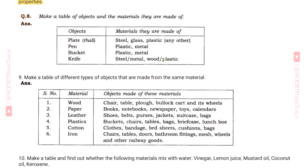Question 8: Make a table of objects and the materials they are made of. Objects and materials: Plate/thali — steel, glass, plastic. Pen — plastic, metal. Bucket — plastic, metal. Knife — steel, metal, wood, plastic.